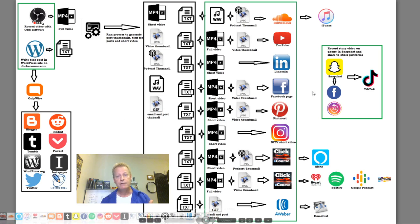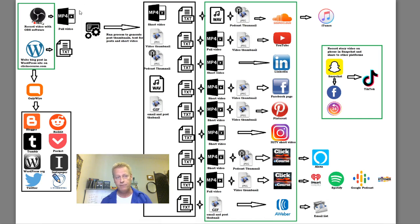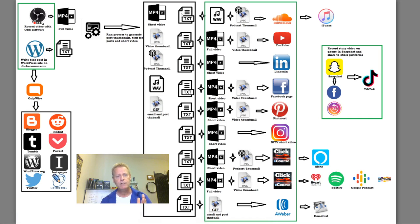What's in green is what I actually manually do. The other parts are automated. When I finish recording my video it saves the full video. I take the text out of the blog, save it in a text file, and then an automation script extracts all these pieces: a short video, video thumbnail, podcast thumbnail, wave file, a gif image, and a bunch of text files for different platforms.